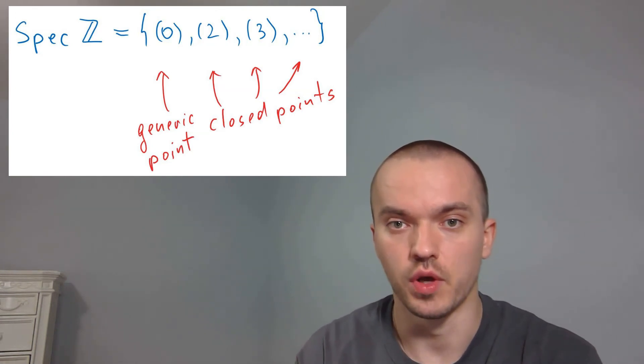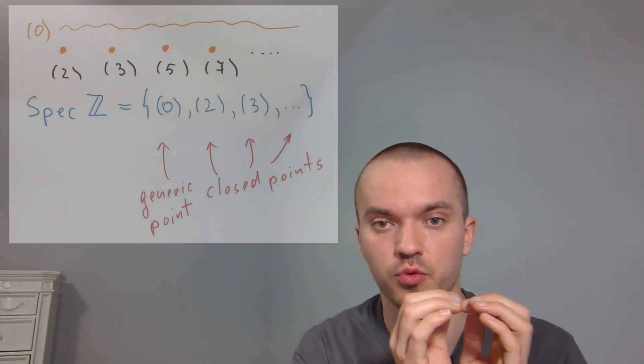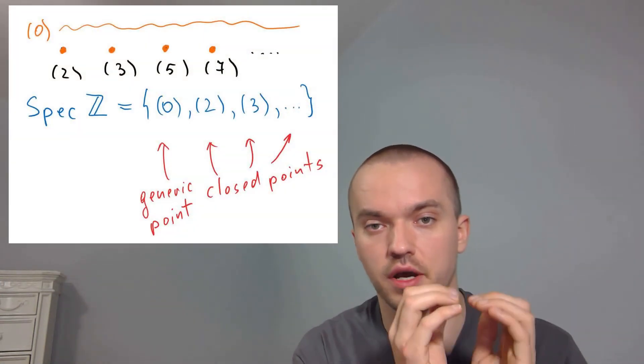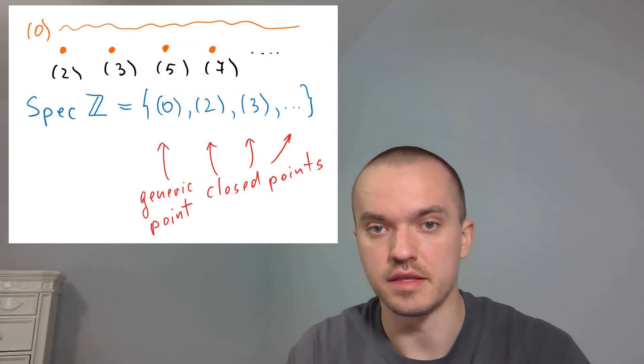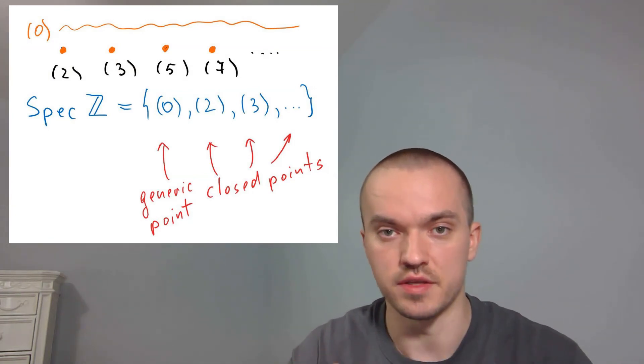So this picture of spec R is, in some sense, a discrete set of points which are given by the prime numbers. And in some sense, which I'm going to explain in the next video, you have zero which is going to be like on the top.